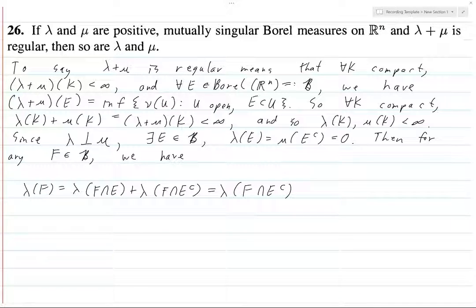So then, but then this is certainly going to be less than or equal to the infimum over all F ∩ E^c contained in U open λ(U). So by this, I just mean the infimum over all open sets U such that F ∩ E^c is contained in U. But then what is this equal to? This is equal to, this is less than or equal to...